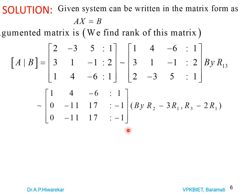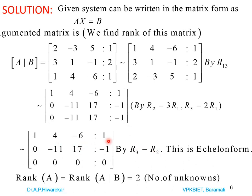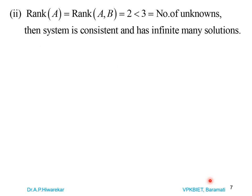Next we apply R3 − R2 to make that position zero, giving the last row as [0, 0, 0 | 0]. This is the echelon form, with all entries below the diagonal equal to zero. The rank equals the number of non-zero rows; there are 3 rows but only 2 are non-zero, so rank(A) = rank(A|b) = 2, which is less than n = 3. The system is consistent and has infinitely many solutions.